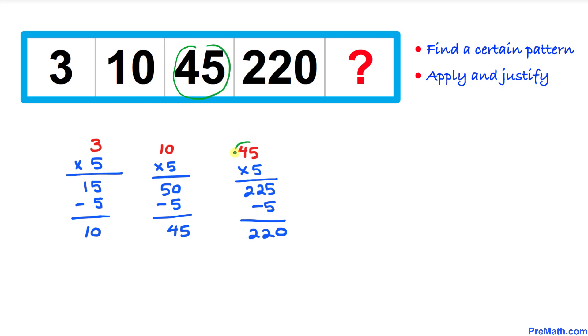And now let's focus on this 45. I have just copied down over here. We are going to multiply by 5. That's going to give us 225. Minus 5 is going to give us 220, which is right up here.